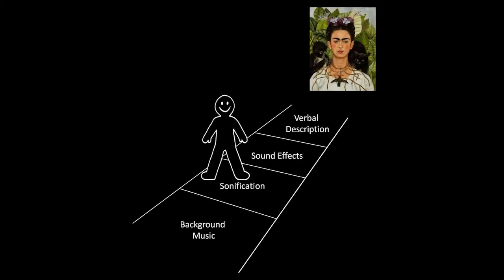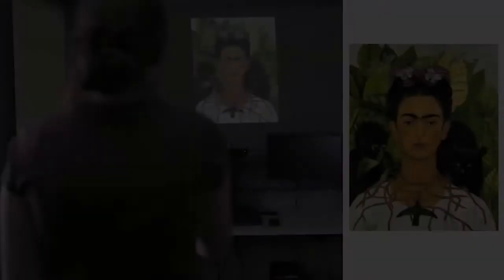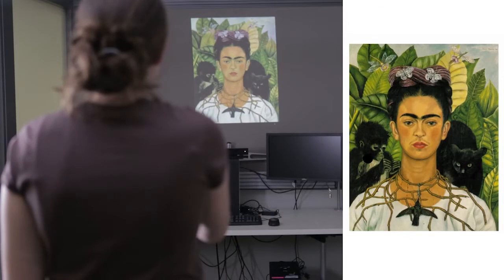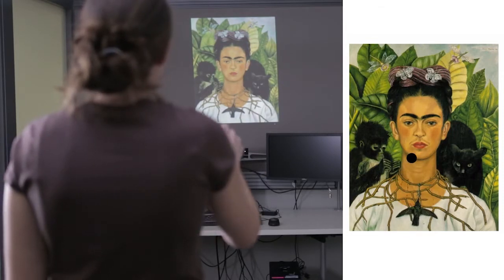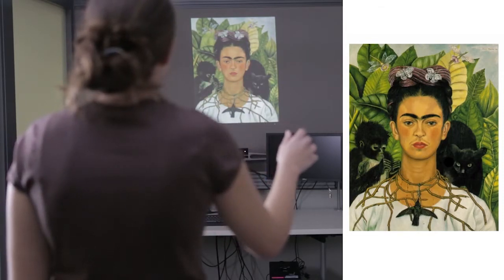Our novel sonification technique plays an orchestral recording where distinct instrumental tracks are assigned to the colors red, green, and blue, and the system modulates the volume of these tracks to convey the color in a region as a mixture of these primary colors. The user is allowed to move his or her arm to select which region of the painting should be sonified.